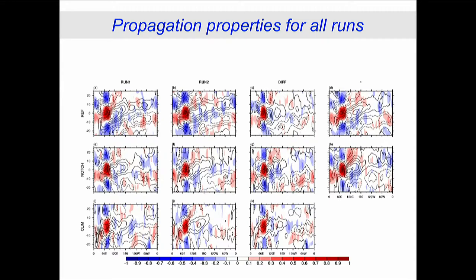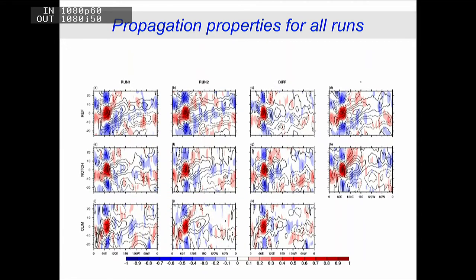Looking at all runs in columns — run one, run two, and the difference between the two. The reference twin runs look the same; the difference between them does not have a nice propagating signal and kind of dies over the Pacific. The notch run is not quite as bad, but lacks strong precursors and looks weak in the mid-Atlantic. The difference field in the notch case is less distinct than for the reference case, indicating we're missing important information from the boundaries which affects propagation. The climatology run is rather poor.